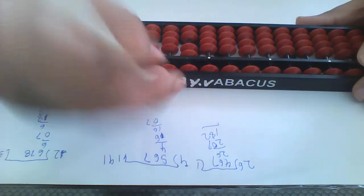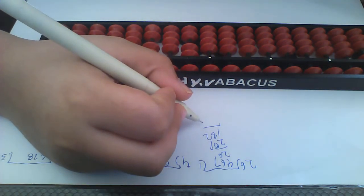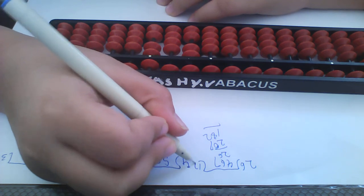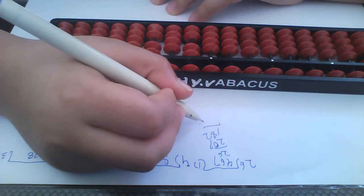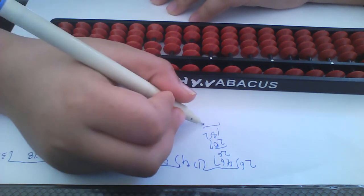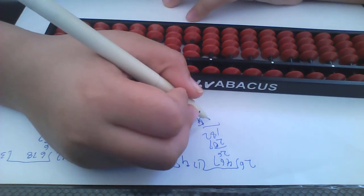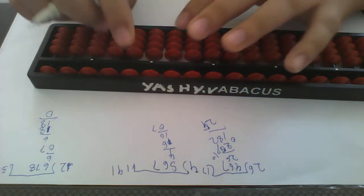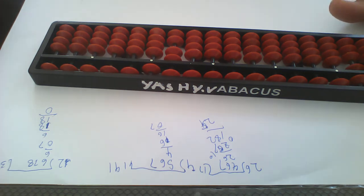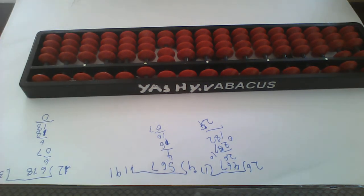182 will minus from 207. The remainder will be 25. So 25 is the remainder and the answer is 17. Like this we have done Abacus level 6 fully complete.